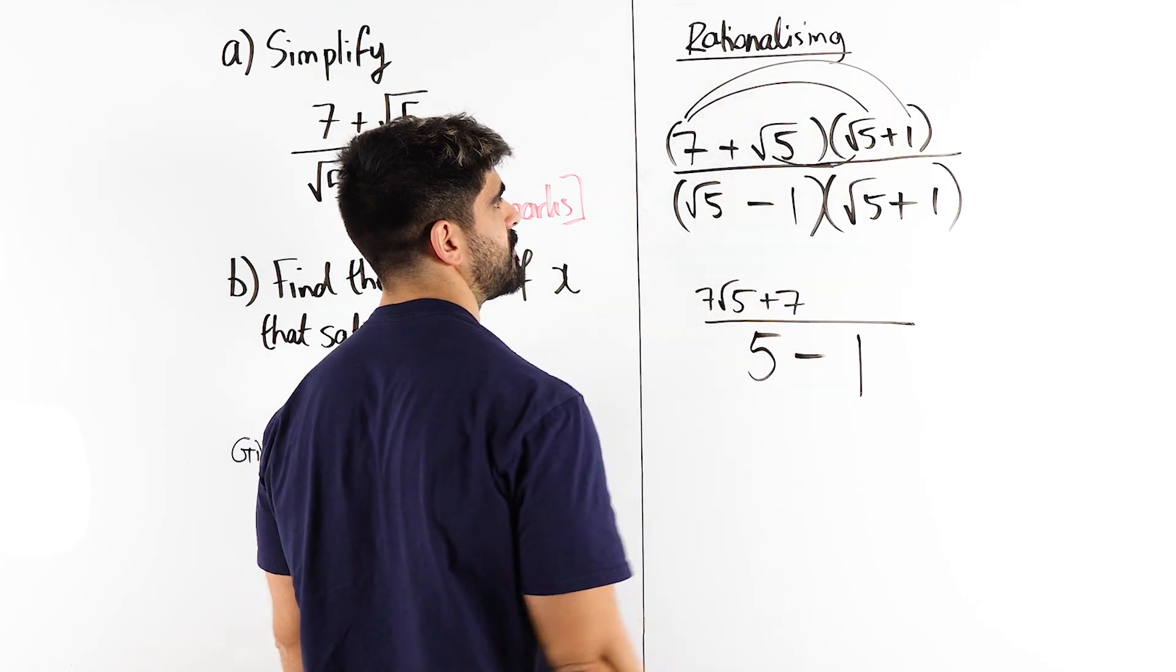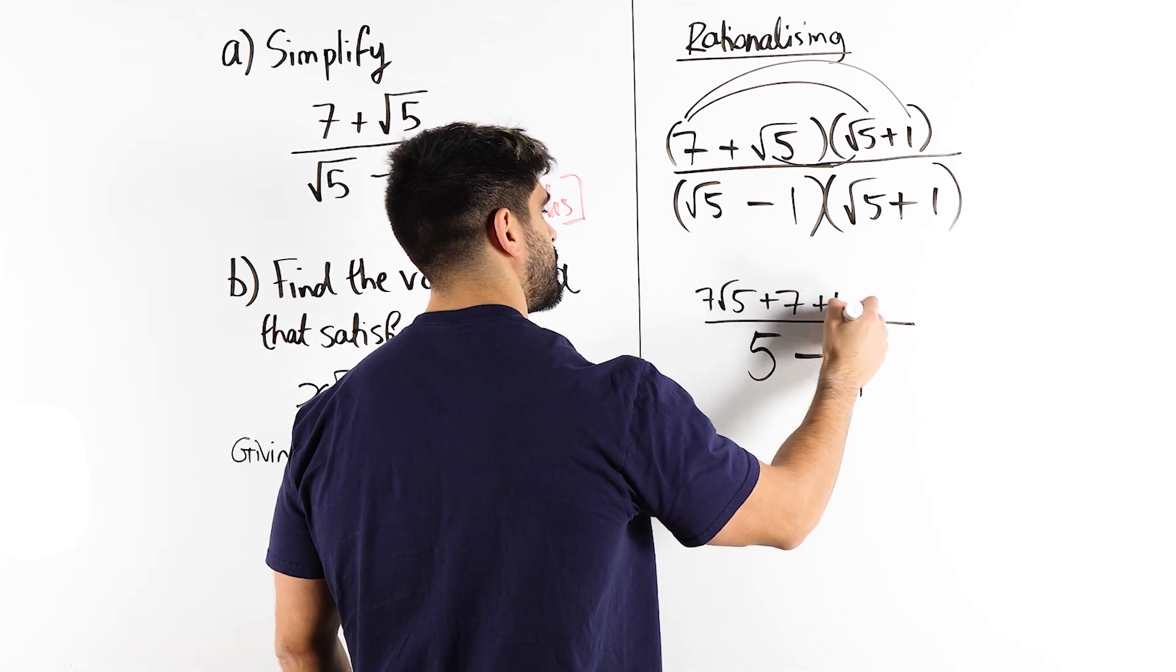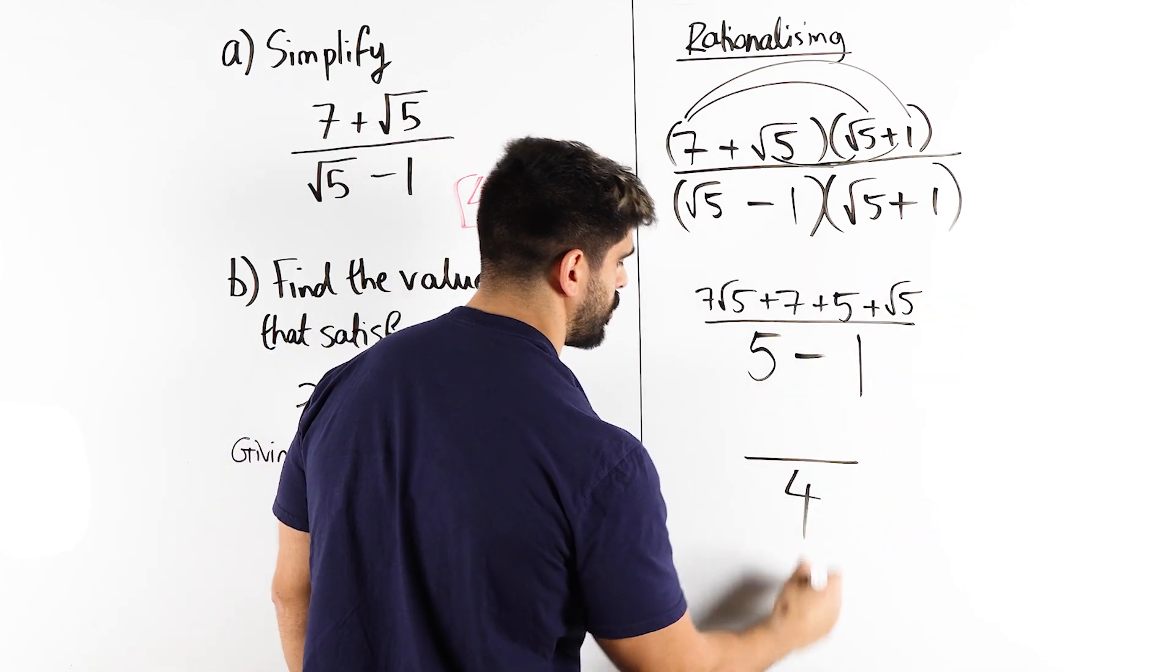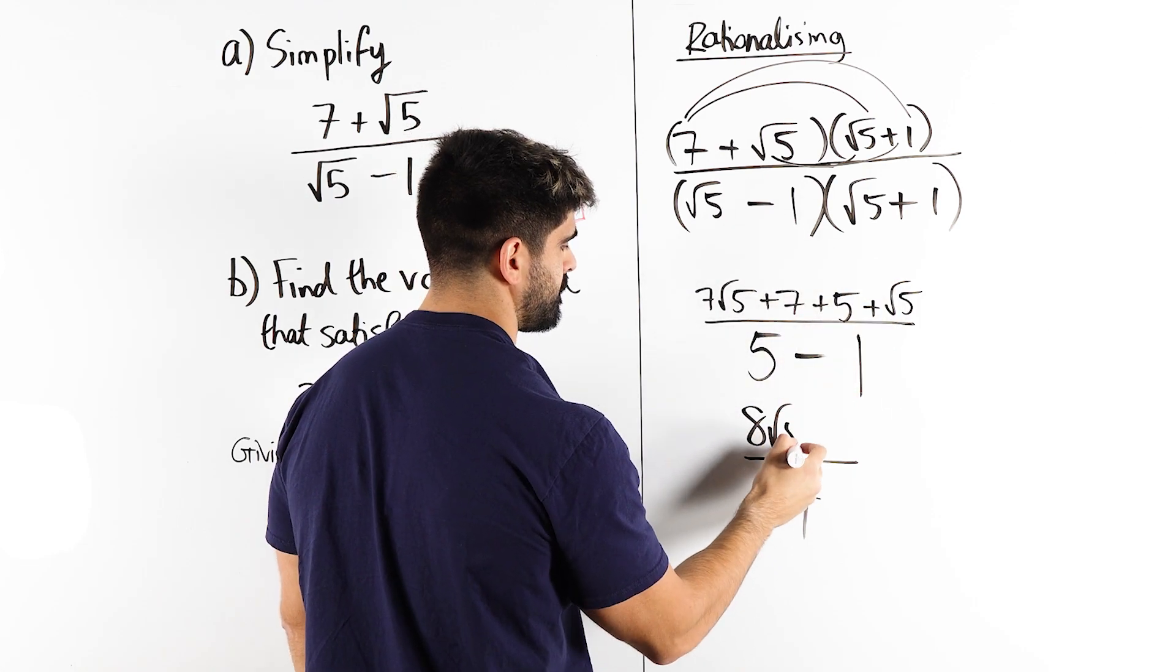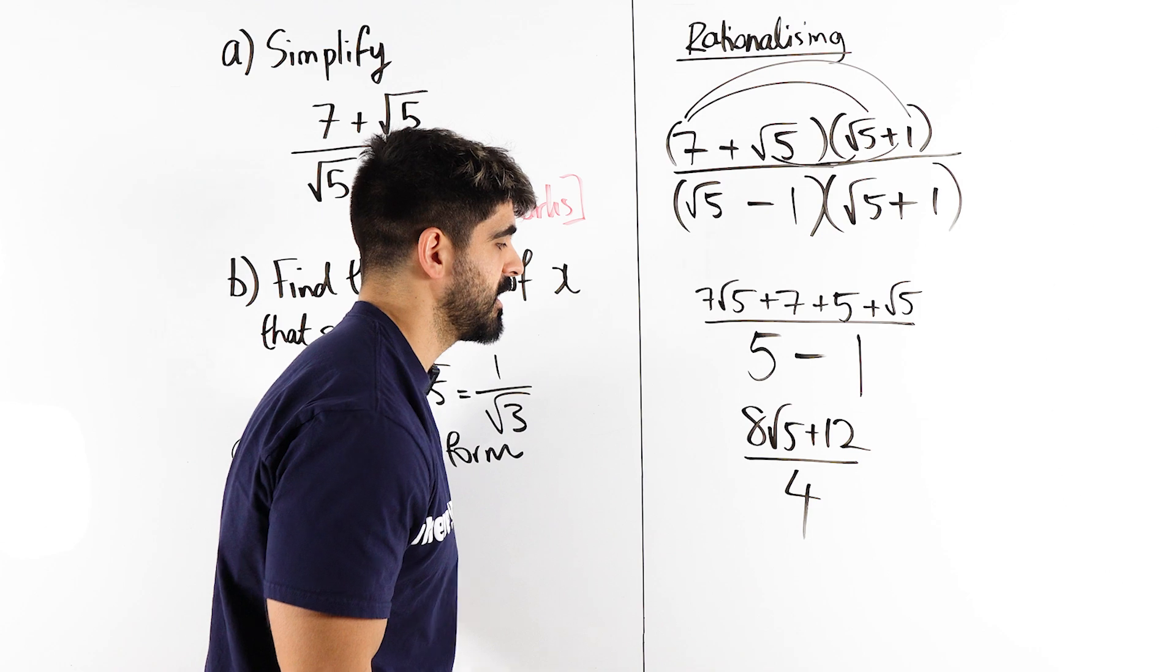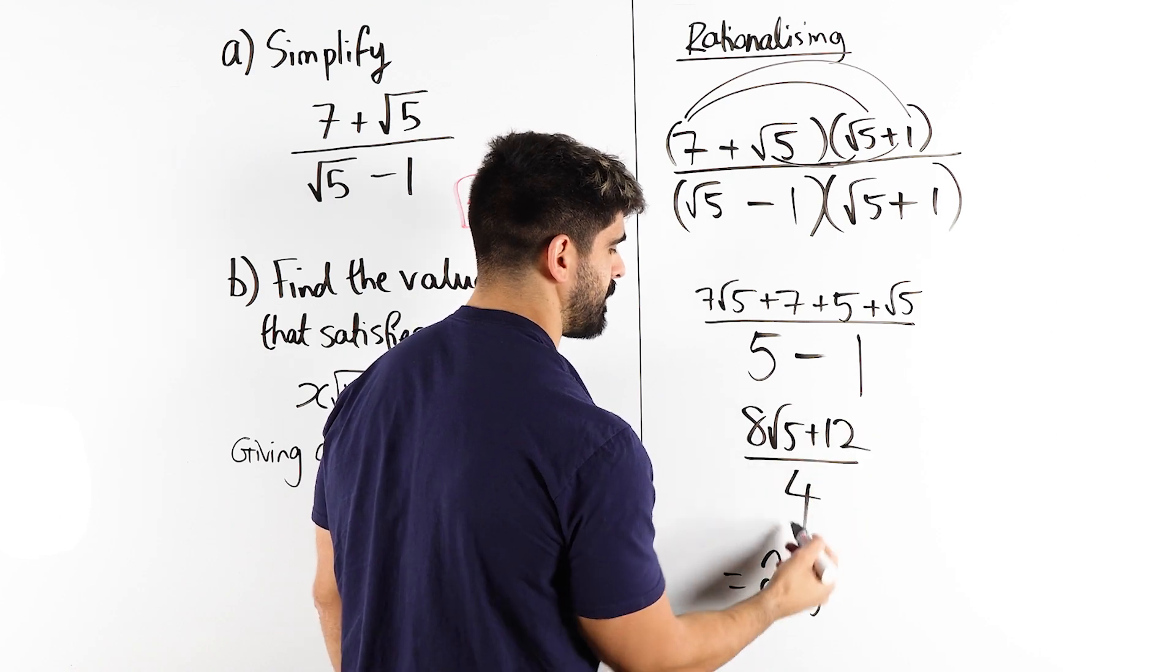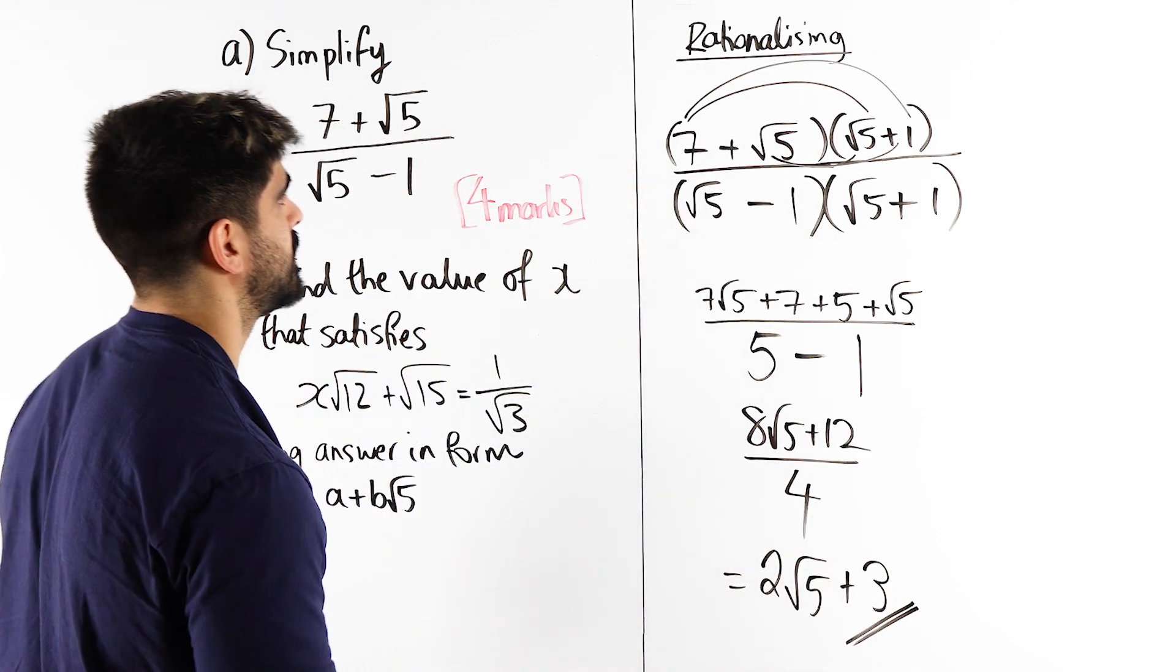Here we have root 5 times root 5, which we already know is root 5 squared, which is 5. And then we have root 5 times 1 is root 5. 5 minus 1 is 4. 7 root 5 plus root 5 is 8 root 5. 7 plus 5 is 12. Now we're not done yet, because 8 divided by 4 is 2. 2 root 5. And 12 divided by 4 is 3. And that, Brian Coleslaw, is your answer.